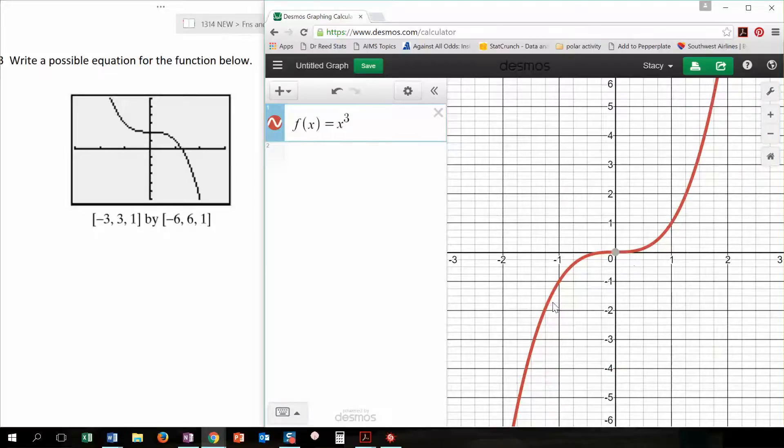Okay, and here is a zoomed-in version of what we're looking at over here. So if I think that this is the cubic function, but it's reflected, I think that it would be reflected across the x-axis, right?